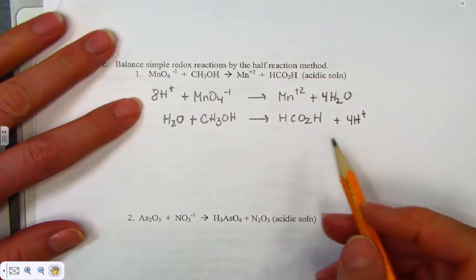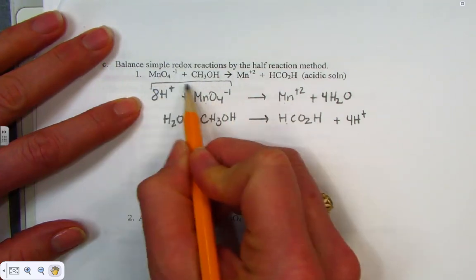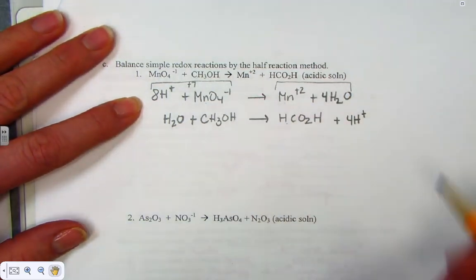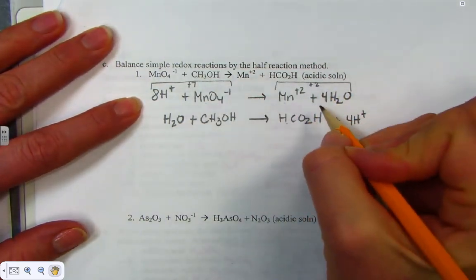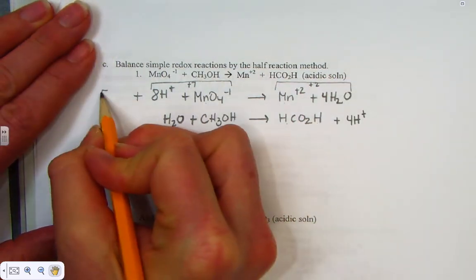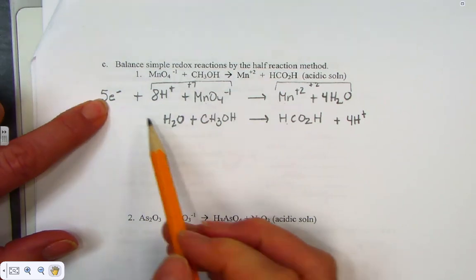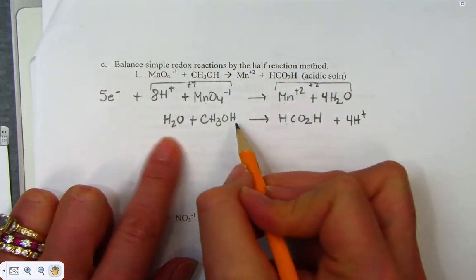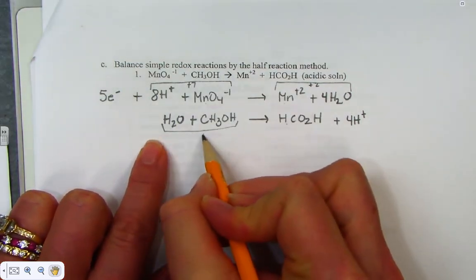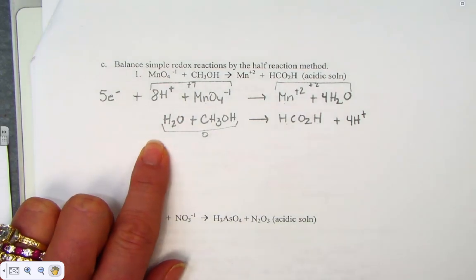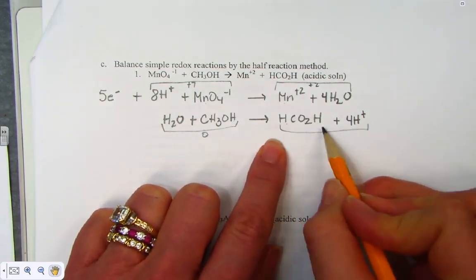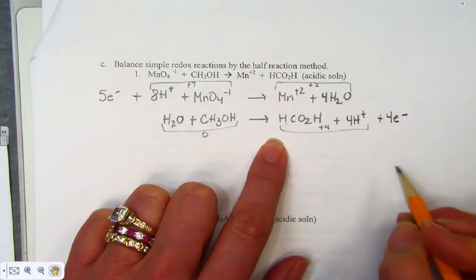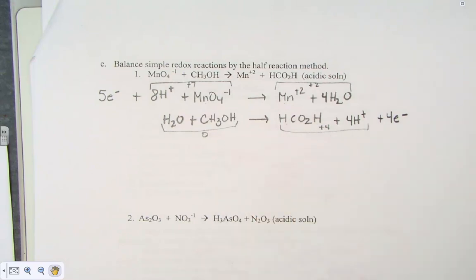Now let's balance by charge. In the first half-reaction the net charge on the left is plus 7, and on the right it's plus 2. I add 5 electrons to the more positive side, bringing both sides down to plus 2. In the second half-reaction the net charge on the left is 0 and on the right is plus 4, so I add 4 electrons to the right, bringing it down to 0 to match the left.